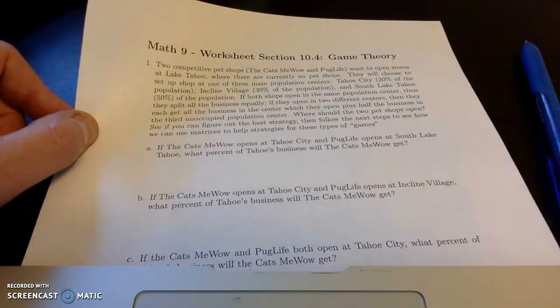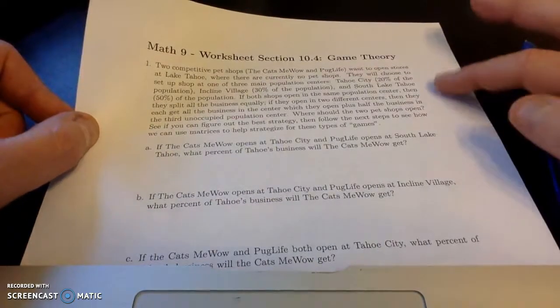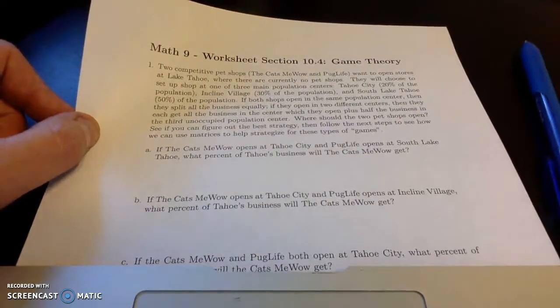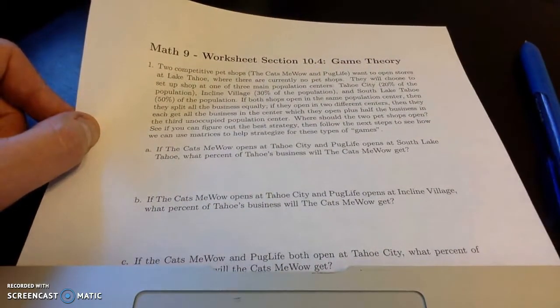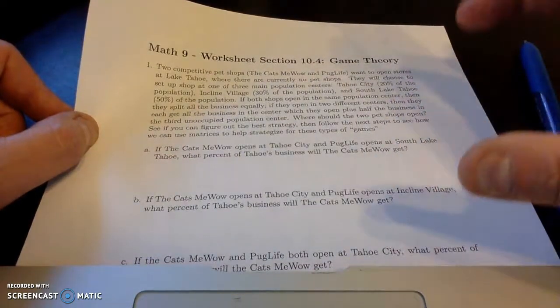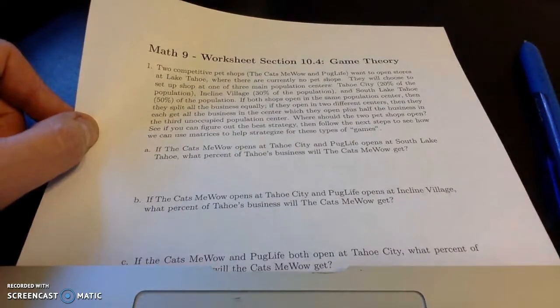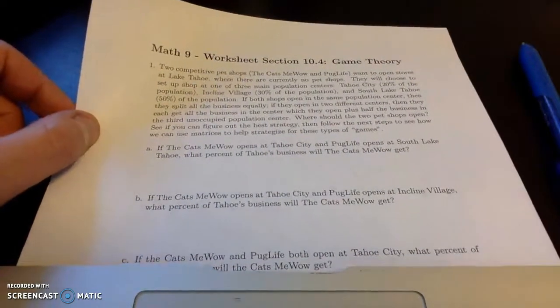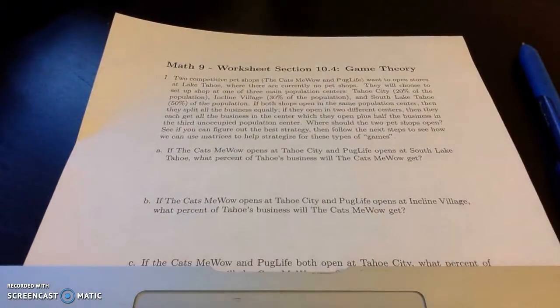If they open in two different centers, then they each get all the business from the center in which they open, plus half of the business in the third unoccupied population center. So we want to figure out what is the best strategy to open up these shops. And you might be able to analyze this and just kind of see automatically what both shops should do. But even if you do see that, I want to go through and learn how to set up these payoff matrices.